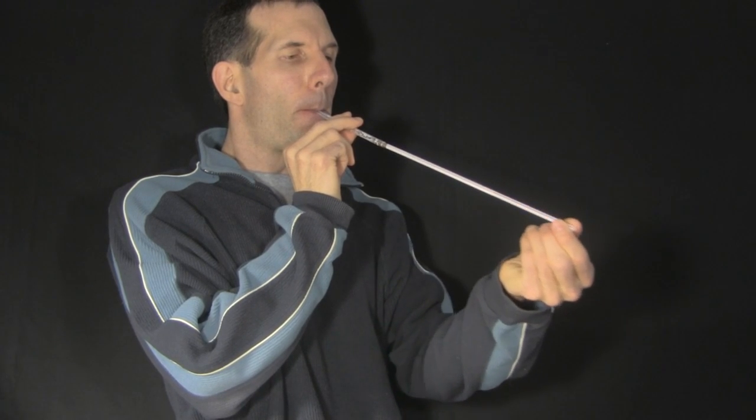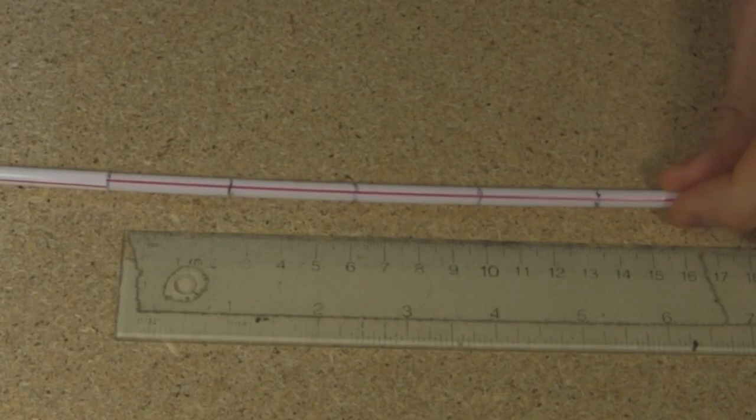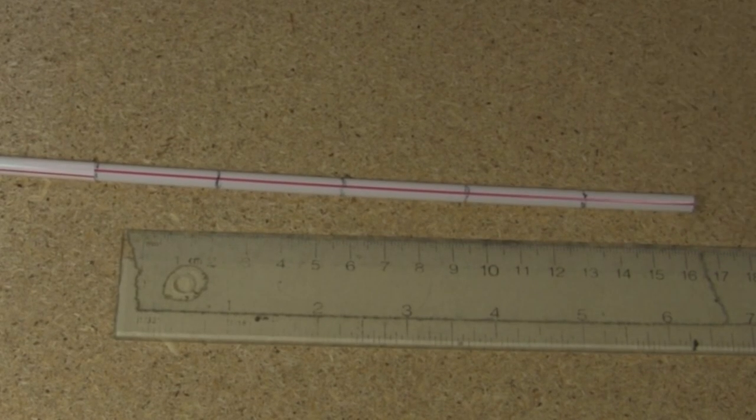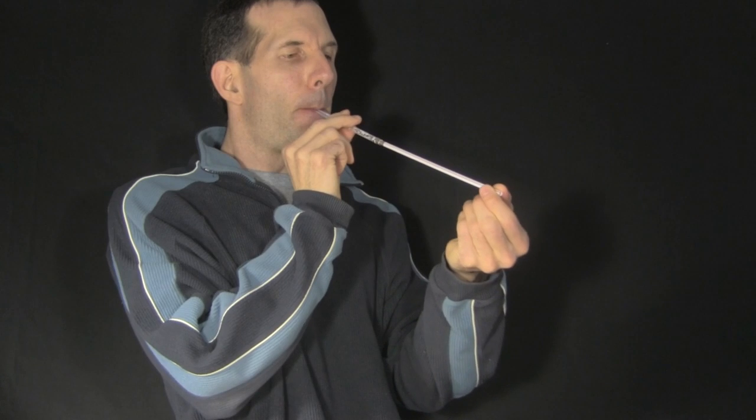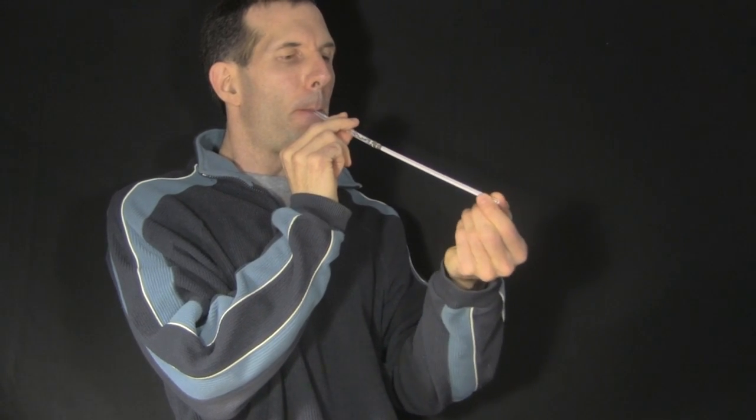But where is C on my straw trombone? Well, notice that I'd put five marks on the straw. Those represent five notes. I chose five because as I moved the straw in and out, I could really hear only five clearly different sounds.